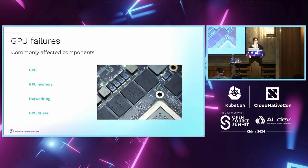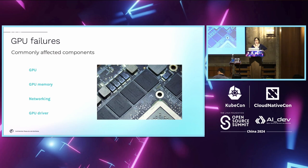In terms of GPU failures, errors can happen at different components. They can happen at the GPU itself — we're all familiar with the 'GPU has fallen off the bus' error. They can happen at the GPU memory level as well. You can have networking issues between the GPUs, and at the software level you can also have GPU driver errors.